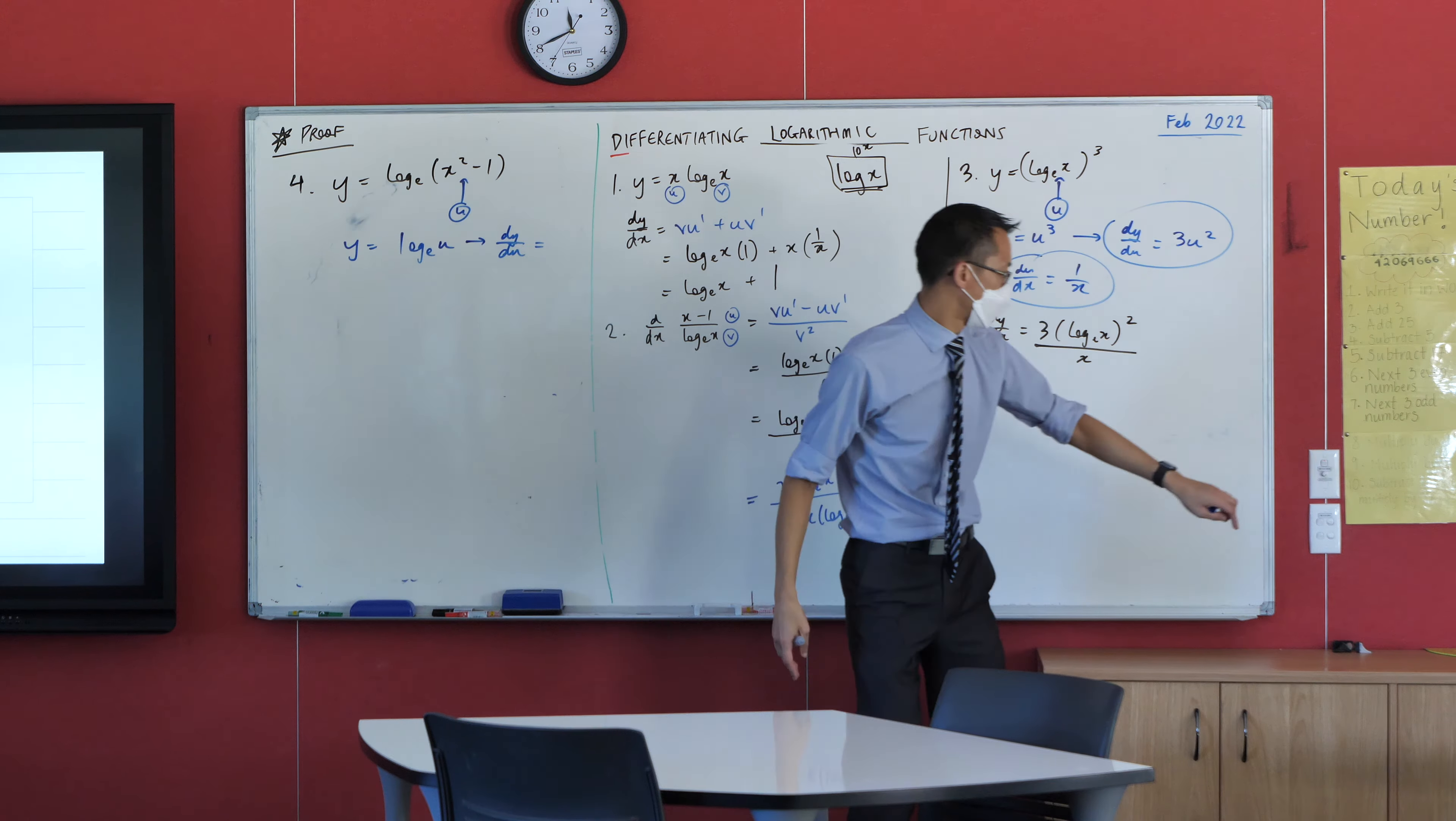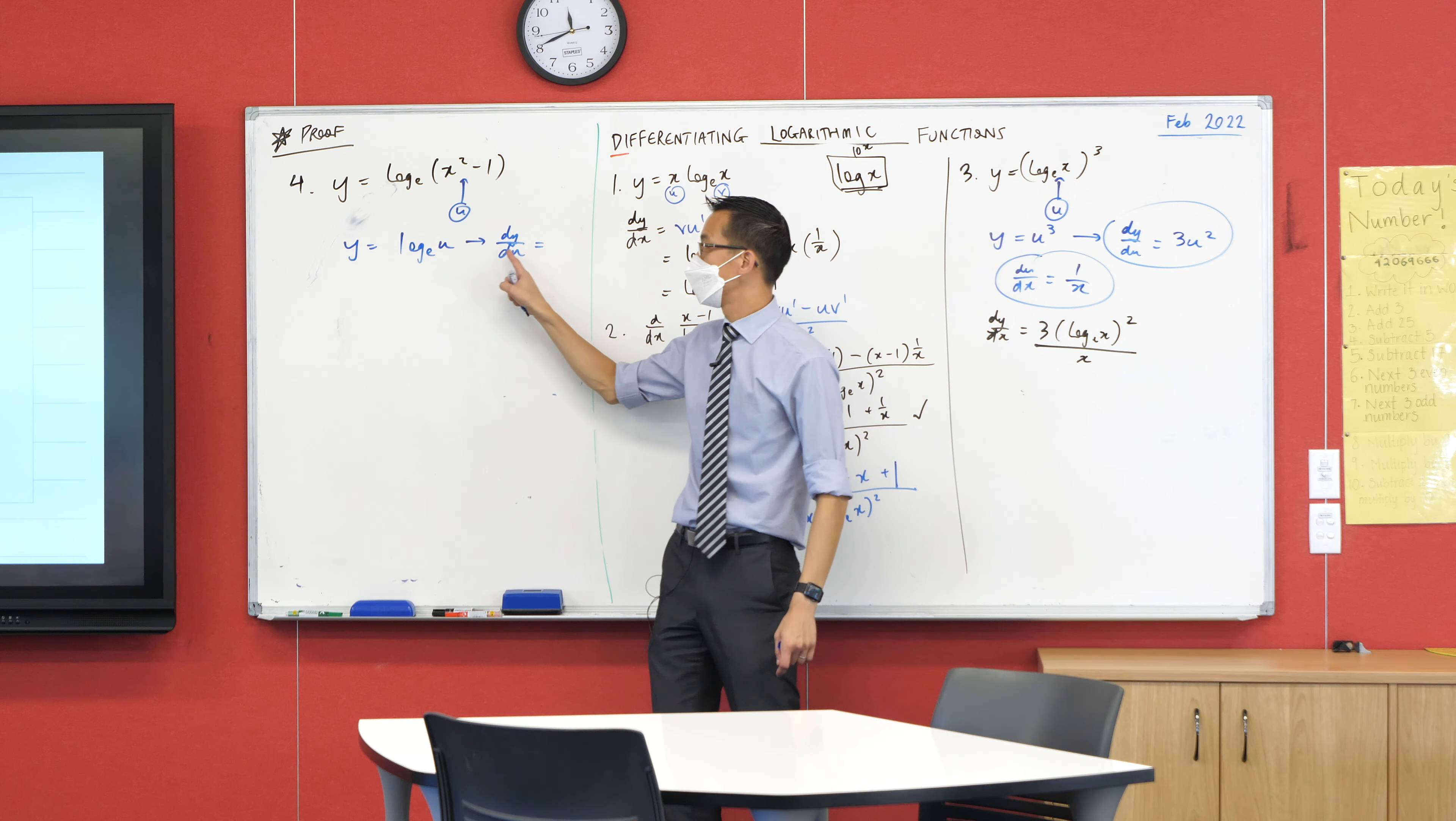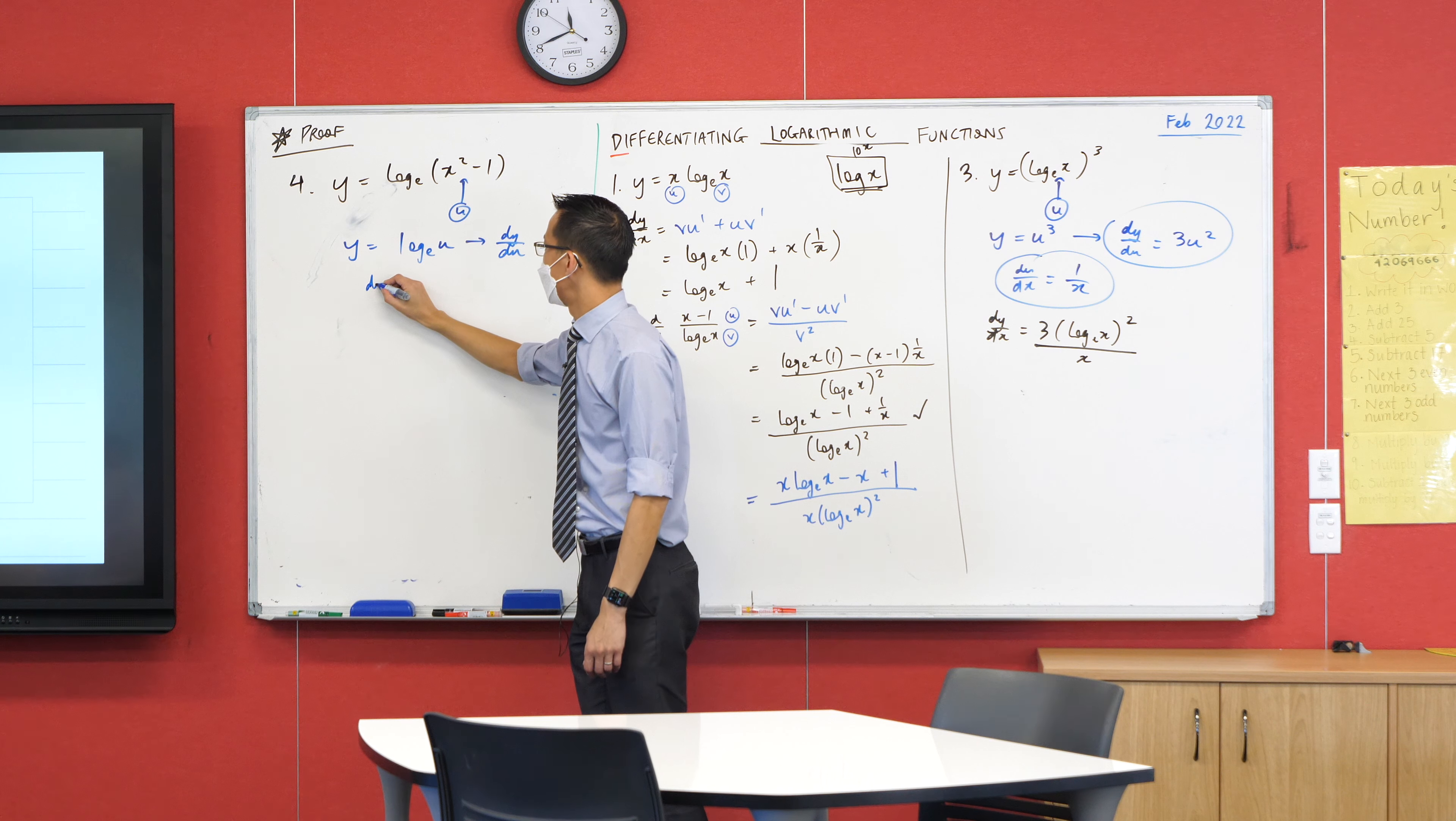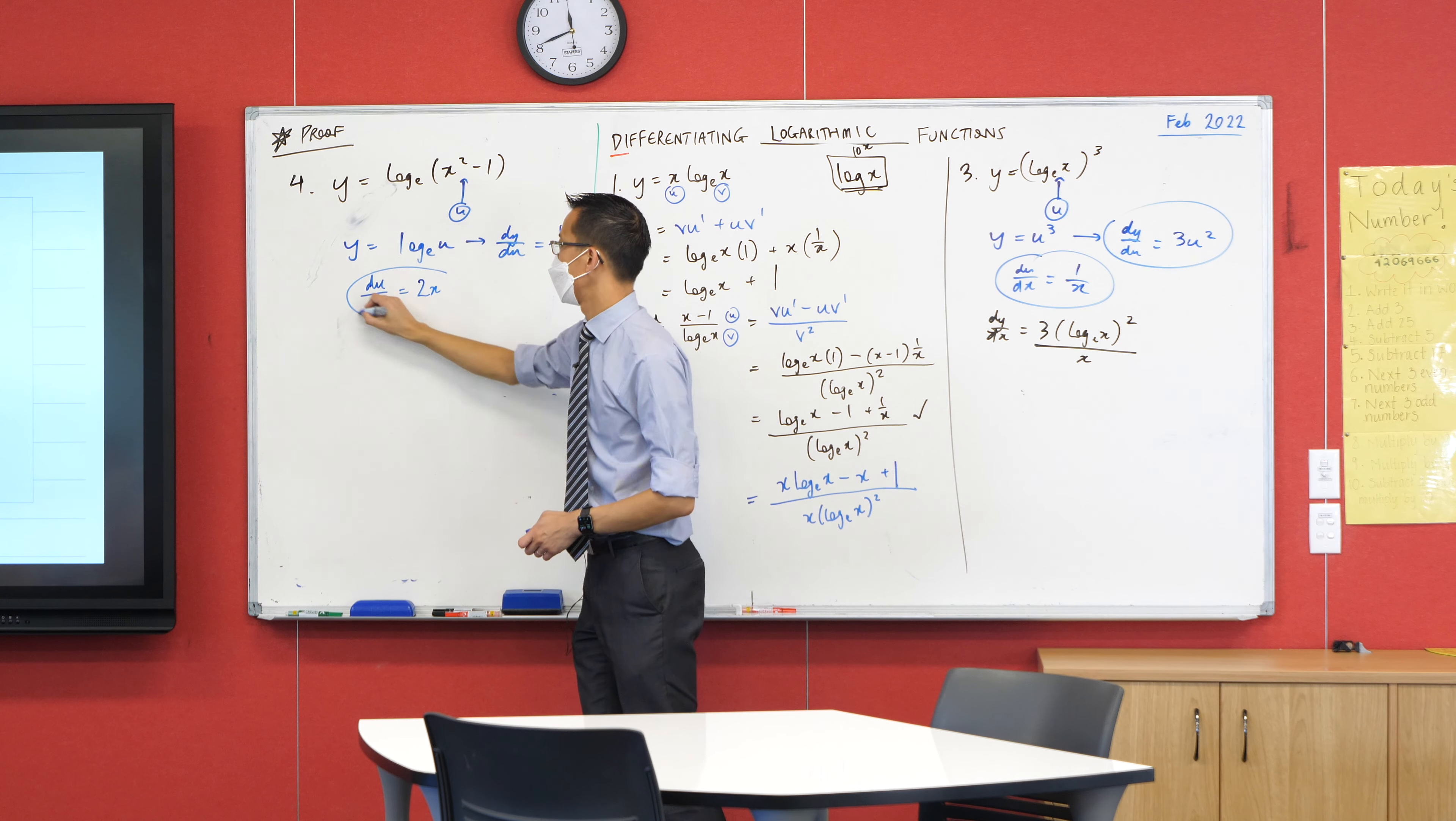So in fact, what I saw before, instead of one over X, it's going to be one over U. There's one part of the chain. Here comes the other part. It's DU on DX. What's the derivative up here? 2X. Very good. You guys are getting really, really fluent at this.